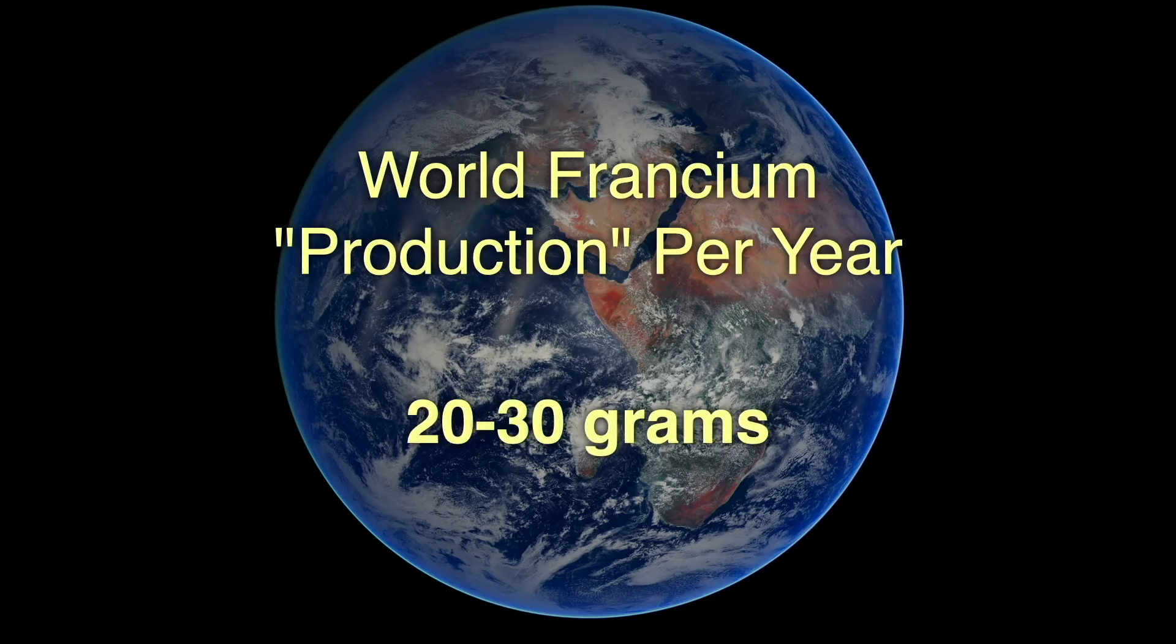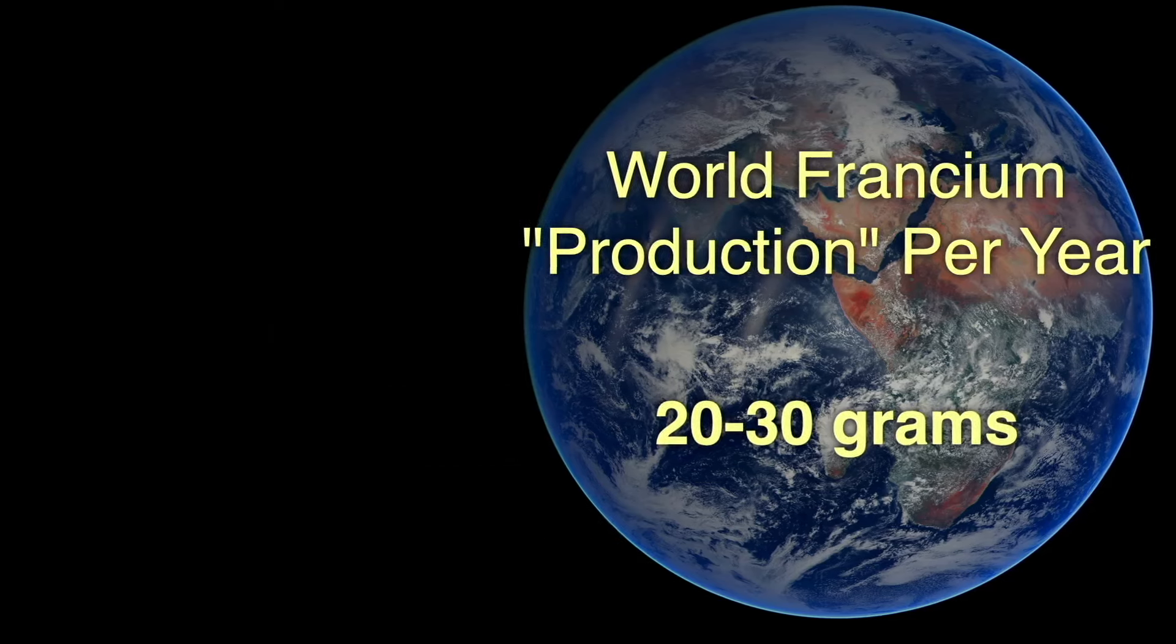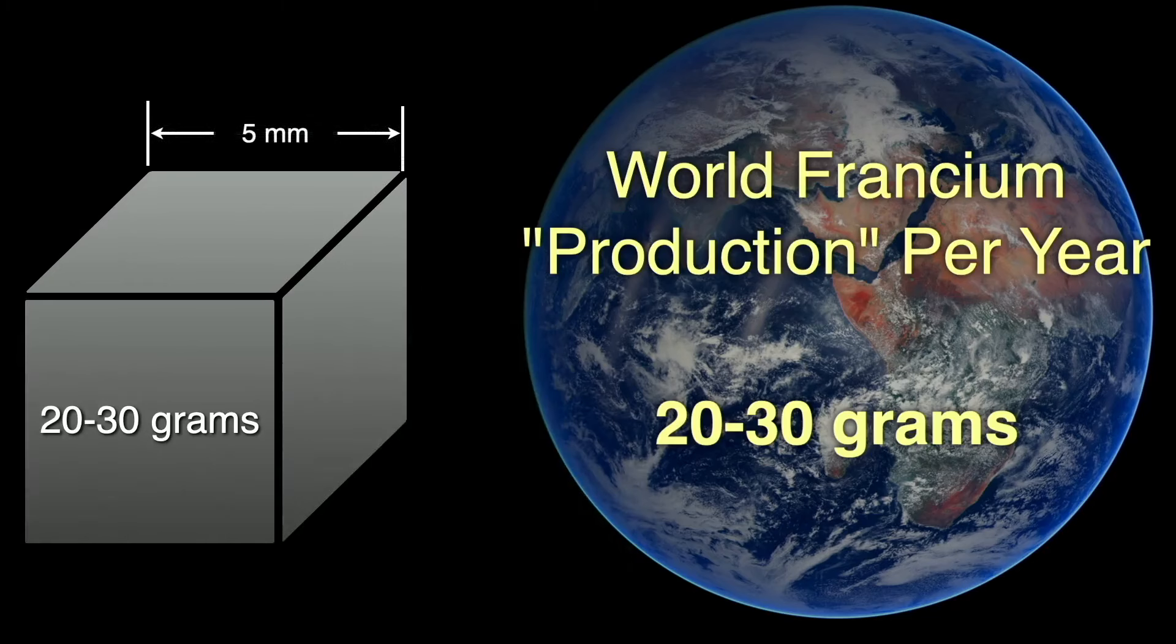Estimates are that at any given moment in the crust of the earth, there is somewhere between 20 to 30 grams of francium. This is constant, since just as much is created as decays. Given the most common isotope, francium-223, which has a half-life of 22 minutes, this means that every 22 minutes, we lose one-half of that 20 to 30 grams, which is replaced by radioactive decay of other elements. So we lose 10 to 15 grams, and we gain 10 to 15 grams every 22 minutes, which means, over the course of a year, about 239 to 358 kilograms of francium are created and destroyed. That constant 20 to 30 grams of francium would be a tiny cube, about 5 millimeters, or one-fifth of an inch on a side, if you could magically collect it all together from the entire earth.